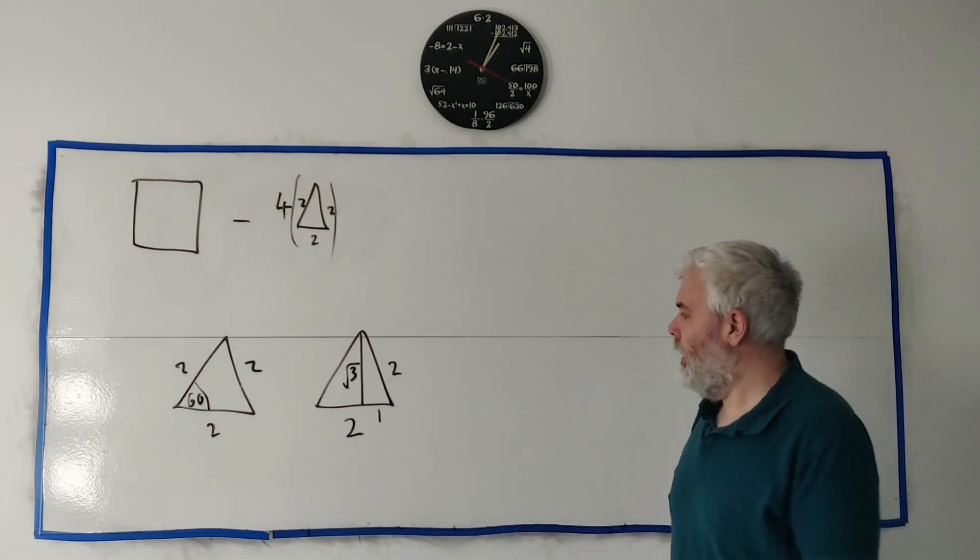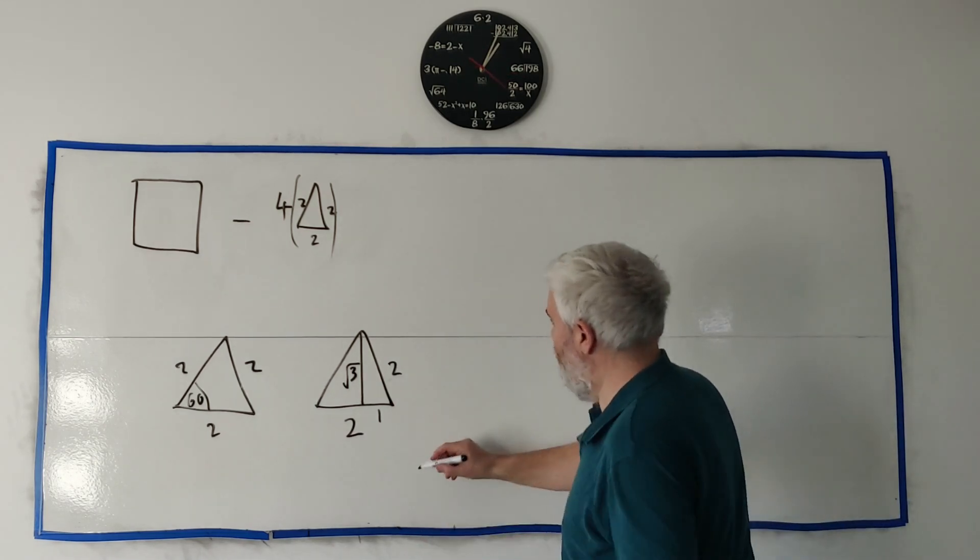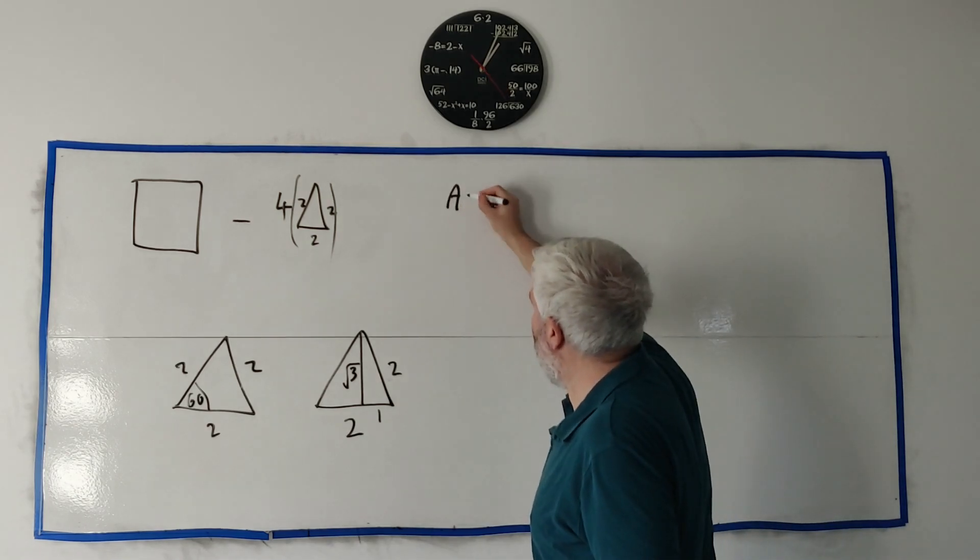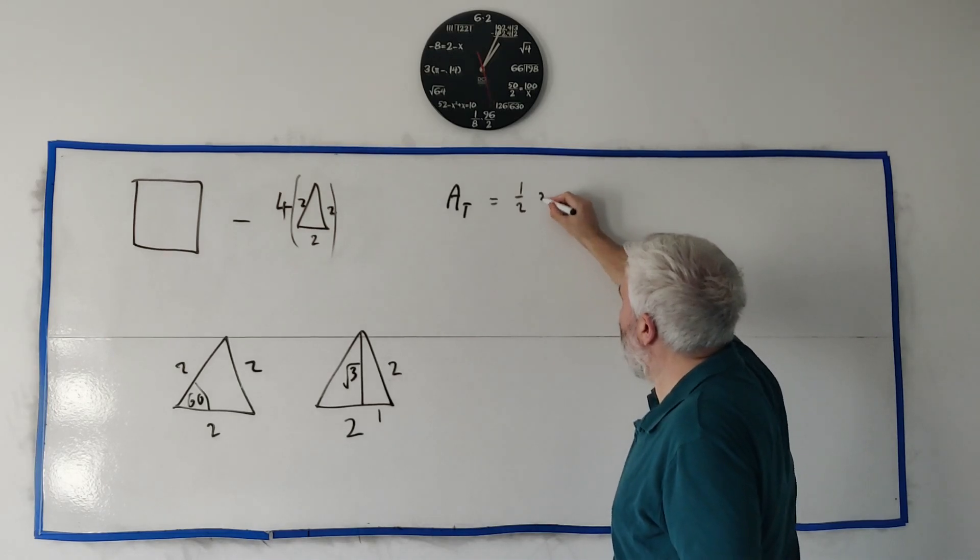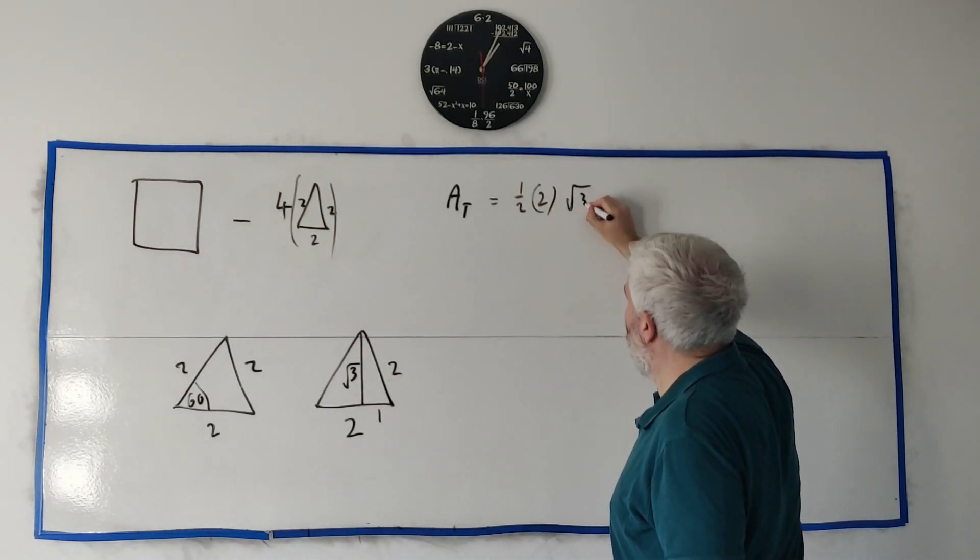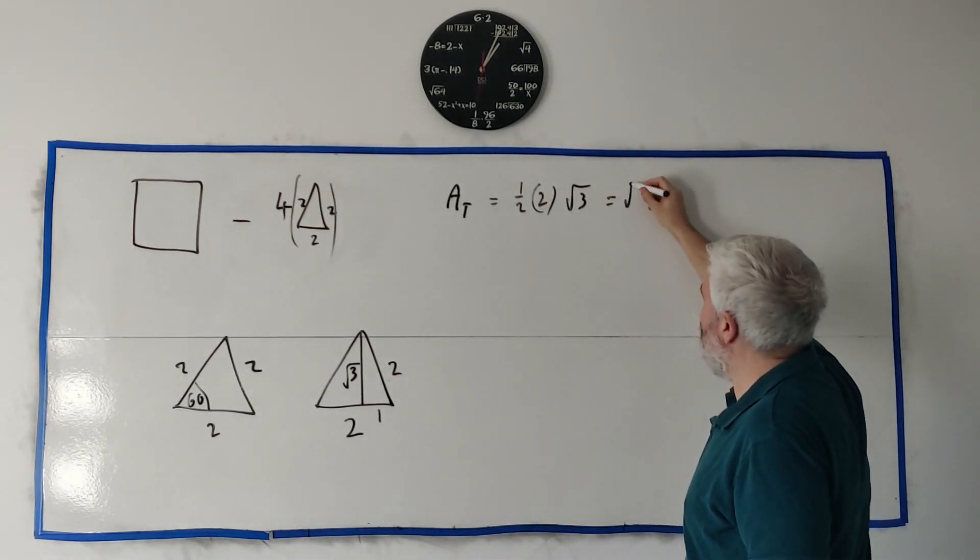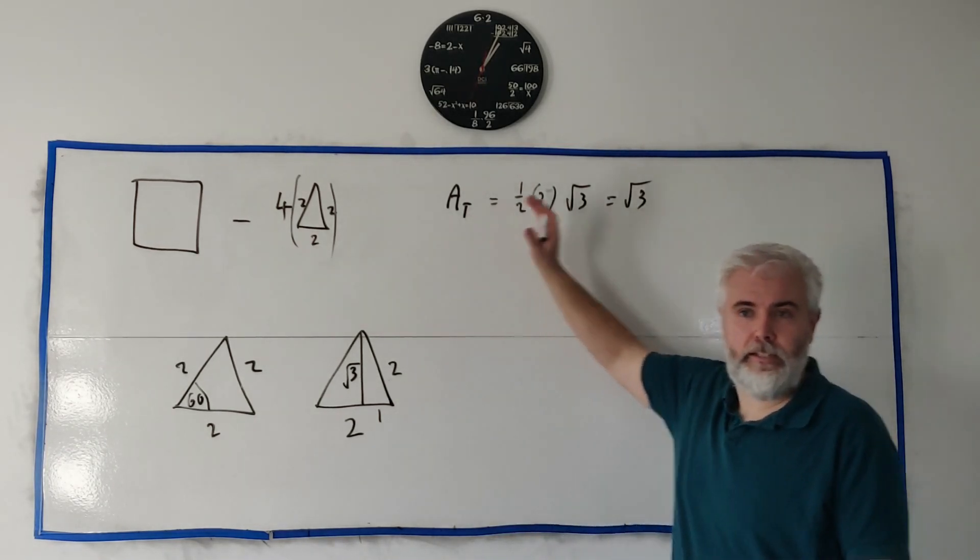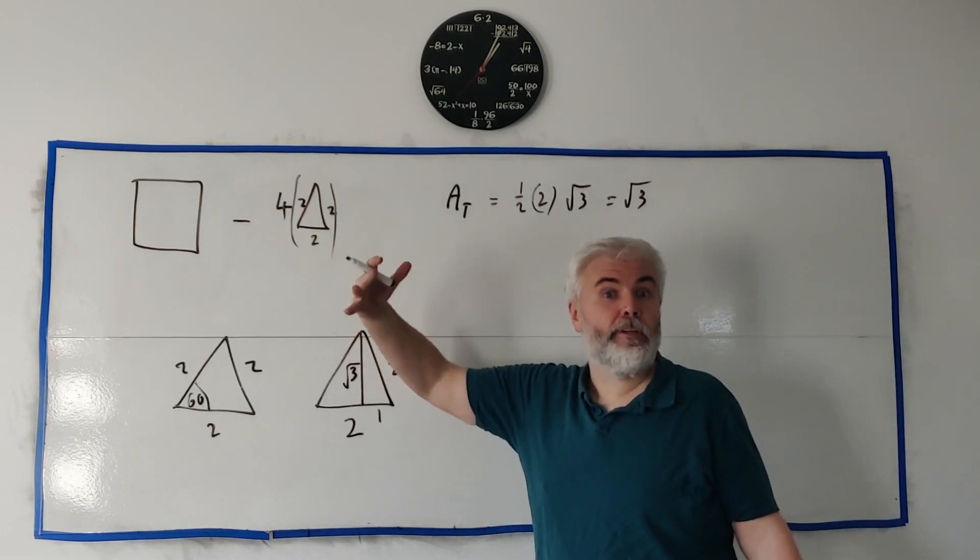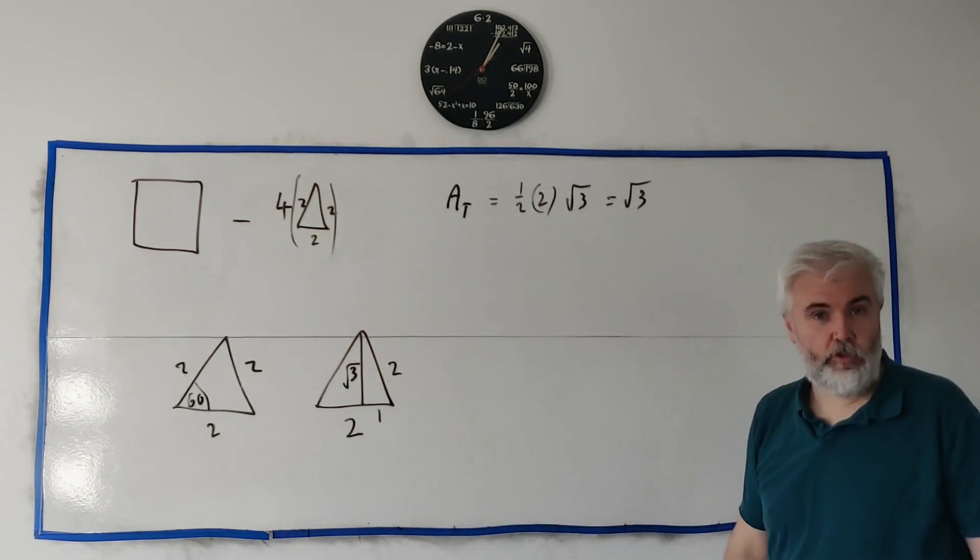So what's the area of it? Let's try it out here. The area of the triangle A_t is equal to a half times two times the perpendicular height root three, which is just equal to square root of three. So one triangle is the square root of three area. Four of them is four times square root of three.